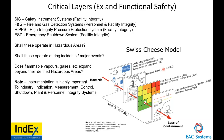If a hazardous event occurs and there is a release of gas, and the gas detectors are outside the defined hazardous area but EX safe operation has not been maintained, you now have a potential source of ignition. During an explosion event, defined hazardous areas go out the window — everywhere becomes potentially hazardous. Instrumentation is highly important: it provides indication, measurement, control, shutdown, and plant and personal integrity systems.